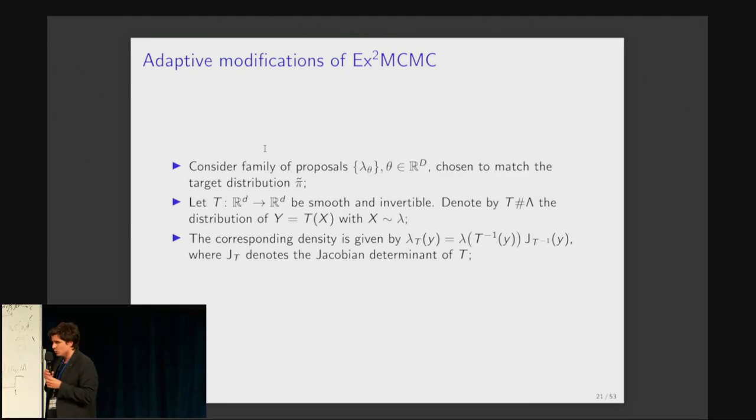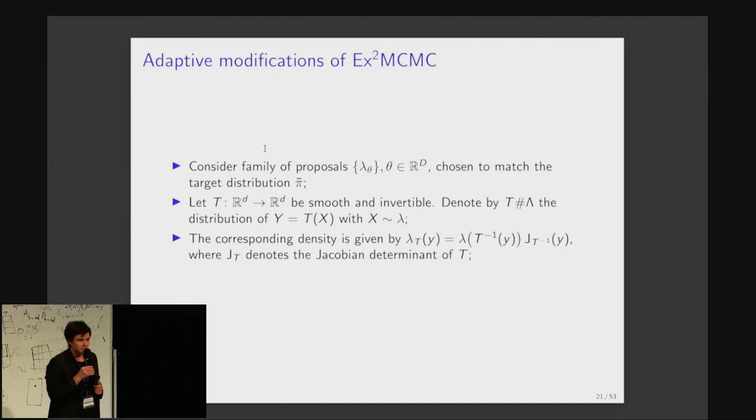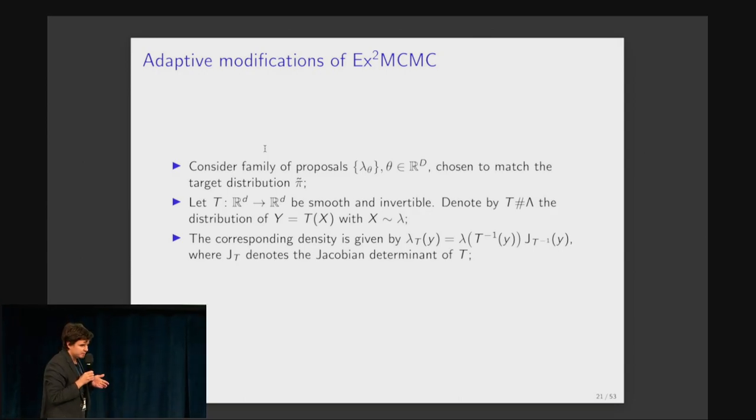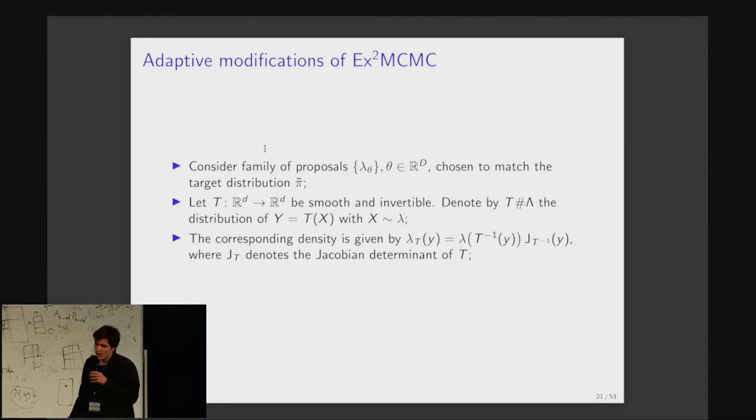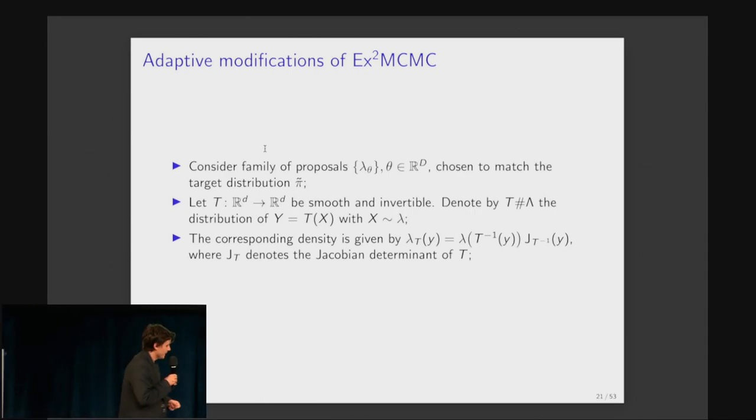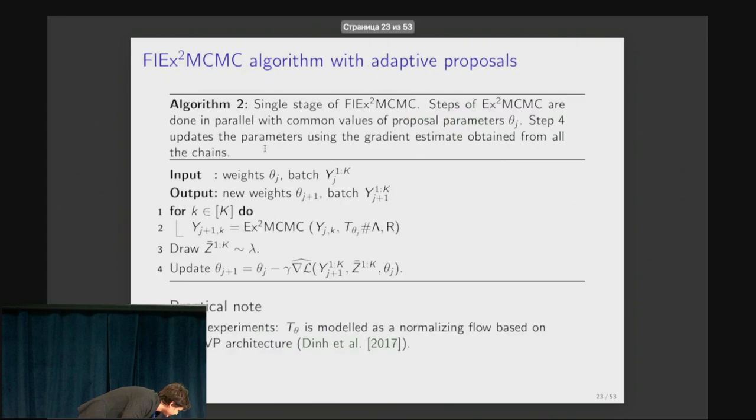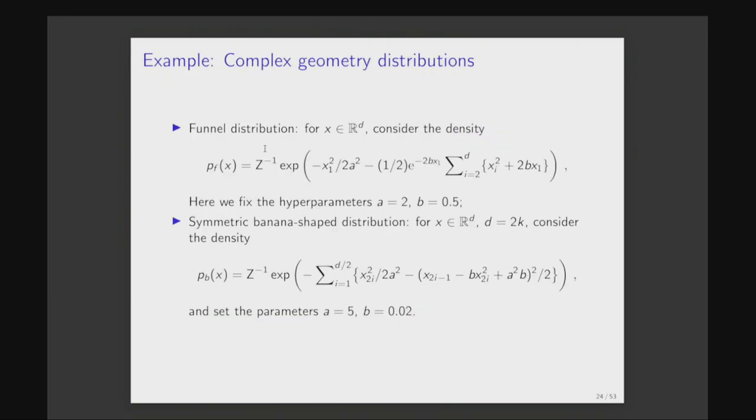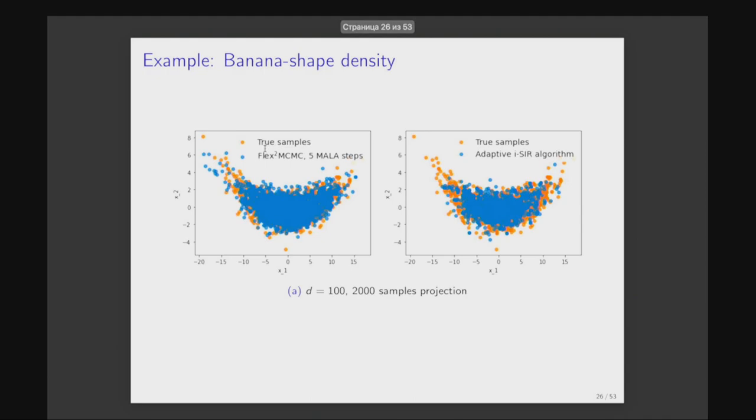What is also possible is to train the proposal distribution in our scheme. For example, it can be done if you parameterize the generative distribution lambda as a push forward of some simple distribution, for example, standard normal, under the mapping, which is defined by, for example, a normalizing flow. We use, for example, in our experiments, we use kind of real NVP-based architecture. We can also prove some convergence results for this scheme based on the stochastic approximation techniques. But perhaps I will skip this part and again show you the results that we obtain.